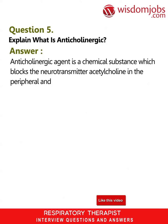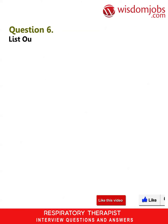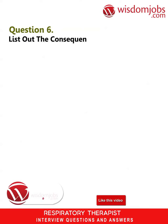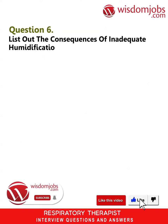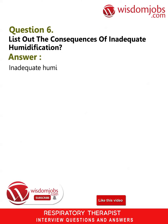Question 5: Explain what is anticholinergic. Answer: An anticholinergic agent is a chemical substance which blocks the neurotransmitter acetylcholine in the peripheral and the central nervous system.